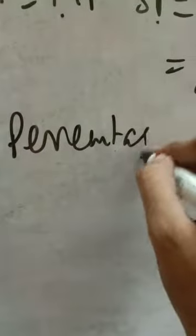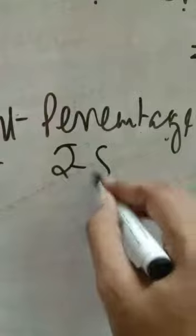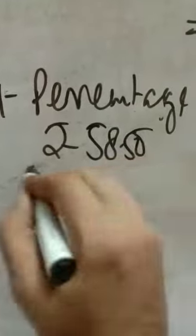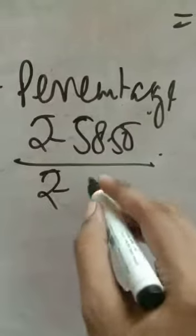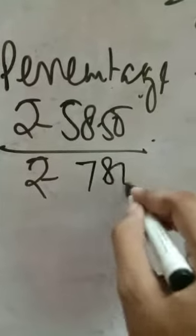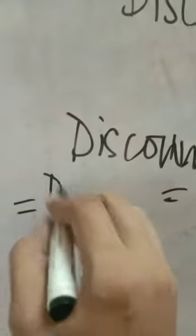So what is the discount percentage? It will be rupees 58.50 by rupees 780. That is basically you are finding out discount.